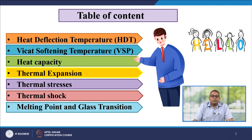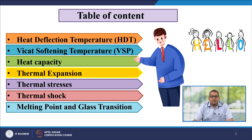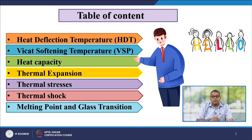In this particular segment, we are going to discuss about the heat deflection temperature. We will discuss about the Vicat softening temperature, sometimes referred as VSP. We will also discuss about heat capacity, thermal expansion, thermal stresses, thermal shock, melting point and glass transition. All these segments are extremely important when we discuss about different aspects of the polymeric system, especially from polymerization to processing to develop the final product.